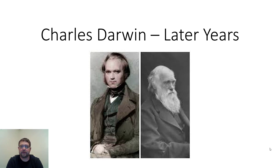Hi all, Dr. Clark here again for lecture. This lecture we're going to talk about Charles Darwin and what I've called his later years — this is after Darwin has gotten married, returned from the Voyage of the Beagle, and already had a child. This is where I think you could say he really starts to become a scientist and devotes the rest of his life to science.